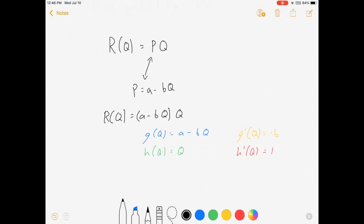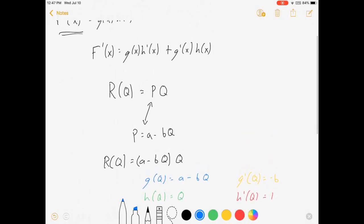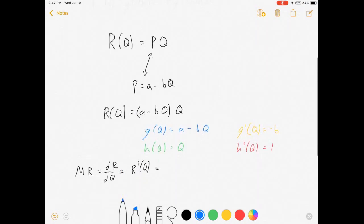So, our derivative of the revenue function, which we actually use a lot. And that, we call it marginal revenue, is dr dq is r prime of q, however you want to write it, those are all the same thing. And let's see, what did I say, what was our rule? So, g times h prime plus g prime times h.